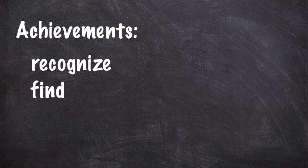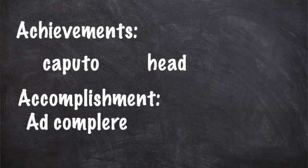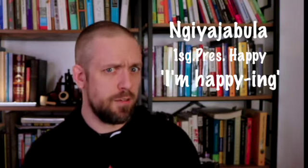I somewhat nerdily remember the distinction by thinking about the etymologies of these words. The etymology of 'achievement' is Latin ad caput — the head. And 'accomplishment' is related to accomplire — to fill up. Then you have states. Not things you actively do, so not activities. Some languages use states where English would use adjectives. In Zulu, for instance, many English adjectives are verbs — yejabula is 'I'm happy,' but it's almost more like 'I'm happy-ing.'